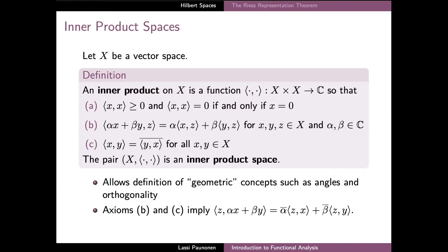The first axiom of the definition requires that if we take an inner product of a vector with itself, then the result should be a real number and more precisely a non-negative real number. In addition, the inner product of a vector with itself is allowed to be zero precisely if x is the zero vector.